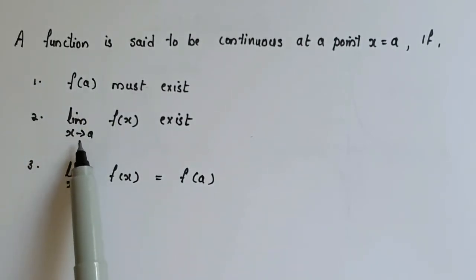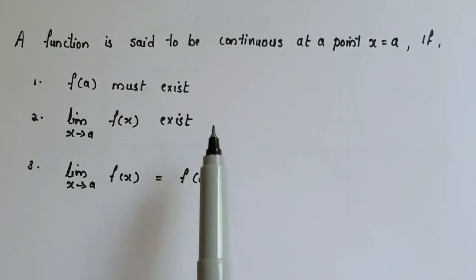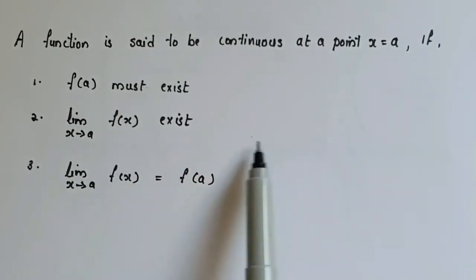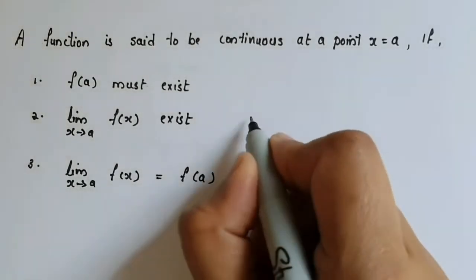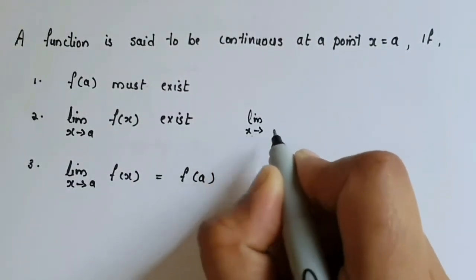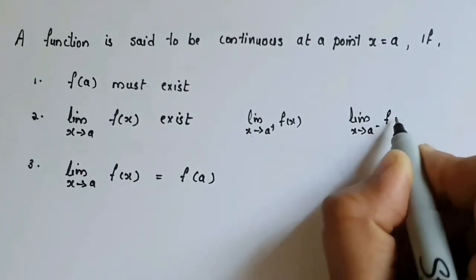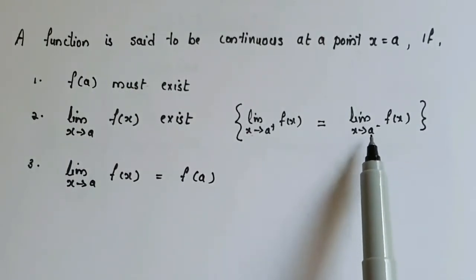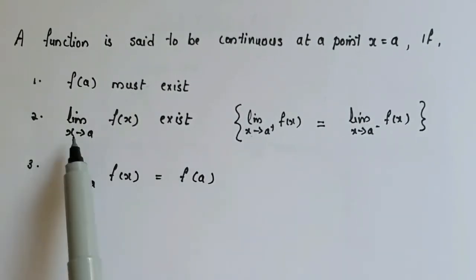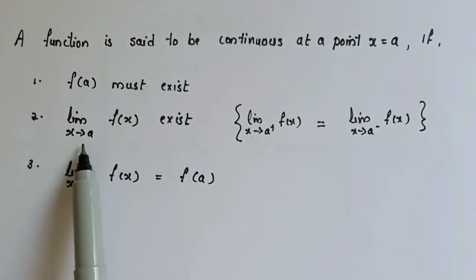The second condition is that the limit as x tends to a of the function must exist. You have already studied that x could approach a number either from the left or from the right, leading to two limits: the left-hand limit and the right-hand limit, denoted by limit x tends to a-plus f of x and limit x tends to a-minus f of x. If these coincide, their common value is the limit of f of x at x equal to a.